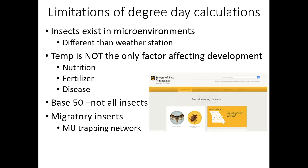Degree days are very helpful for predicting insect movement and activity, but they aren't perfect. Insects exist in microclimates that can be very different from what the temperature station records — if an insect is underneath shaded leaves in a raspberry plant, that temperature differs from the weather station. There are also a couple of other factors that affect insect development not included in degree days, and the base of 50 is a general estimate — it's not perfect for all insects.